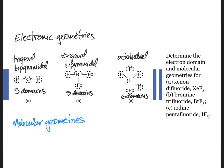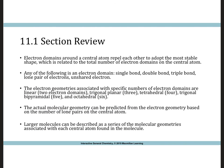Considering the molecular geometries: the trigonal bipyramid containing three lone pairs of electrons for xenon difluoride will have a linear structure. A trigonal bipyramidal structure containing two lone pairs of electrons will have a T-shape for bromine trifluoride. The octahedral electron geometry of iodine pentafluoride will have a square pyramidal molecular geometry due to the one lone pair of electrons in the structure. As always, I'll leave you with the parting thoughts of the authors.